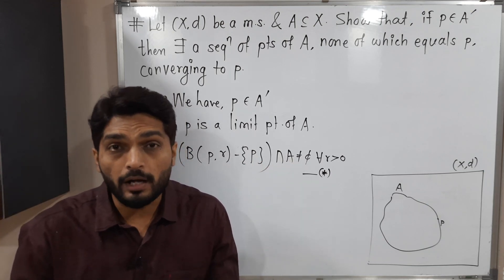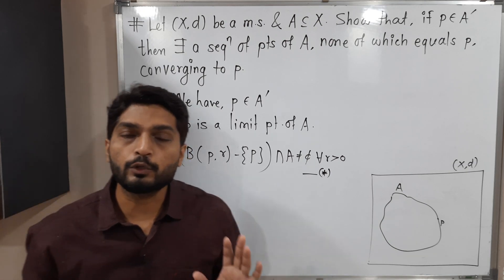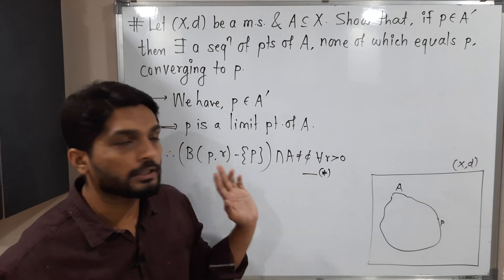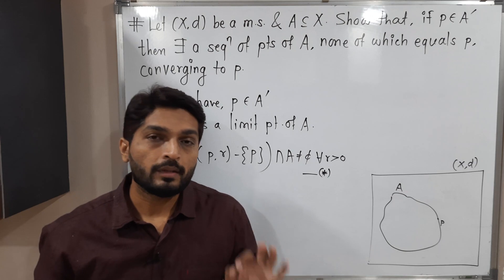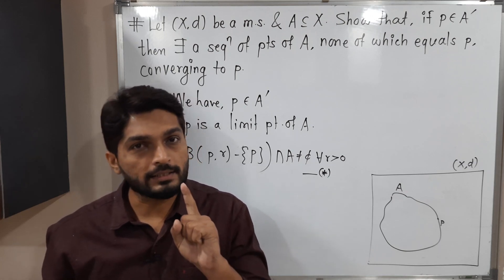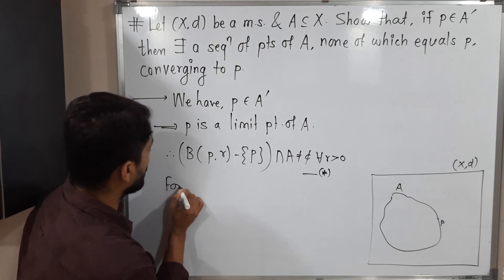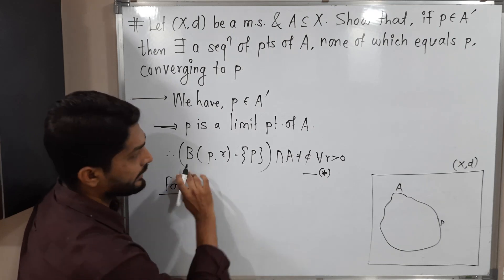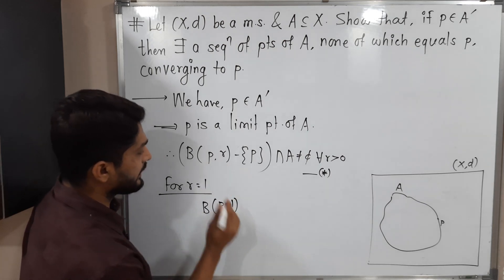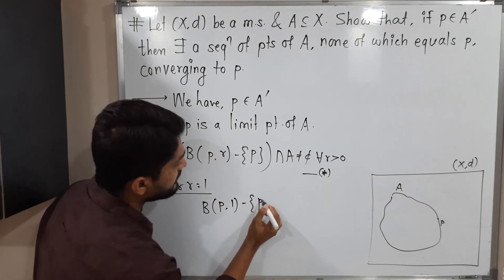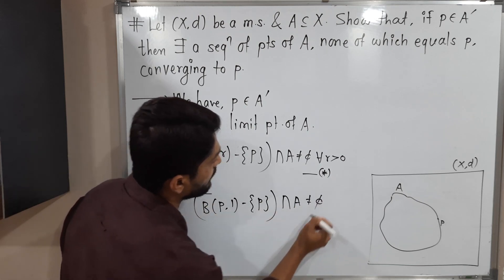So that means you can take R equal to 1, 2, 3, or 1/2, 1/3 — whatever you want — as long as it is positive. For that R, this intersection will be non-empty. Initially I will take R equal to 1. Then we will have B(P, 1) minus singleton {P}, intersection A, is not equal to empty set.